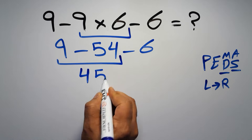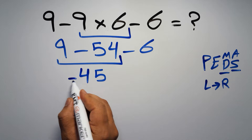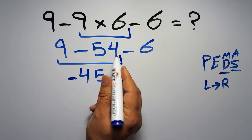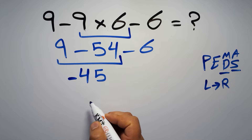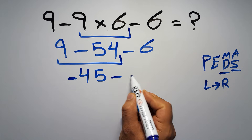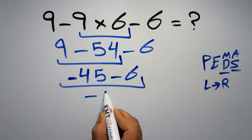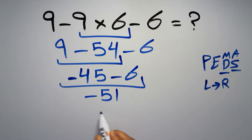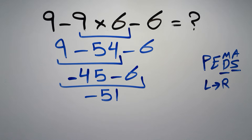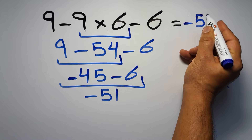We have negative 45, so negative 45 minus 6 equals negative 51. This is our final answer. The correct answer is negative 51. We have to work from left to right.